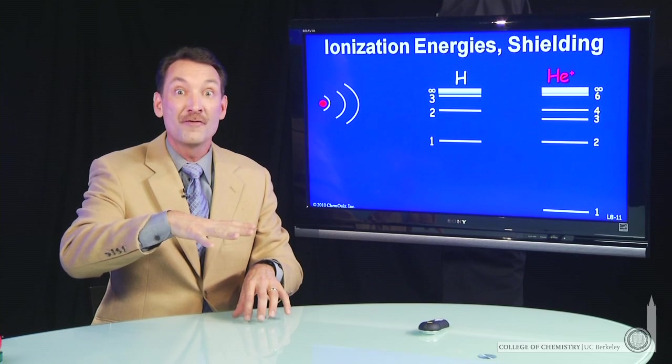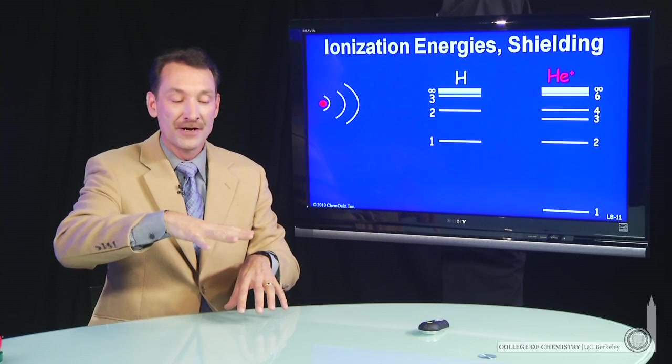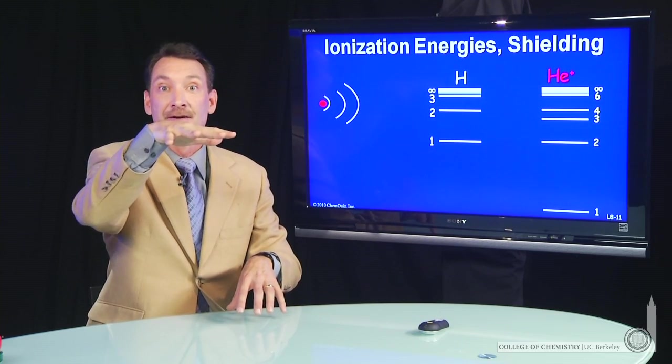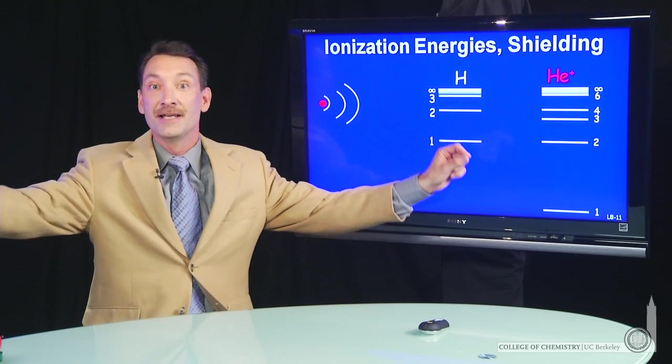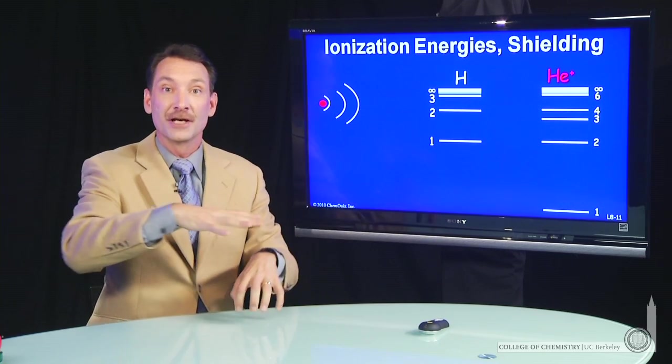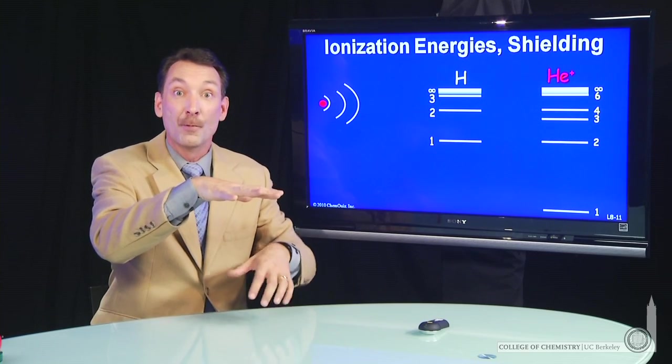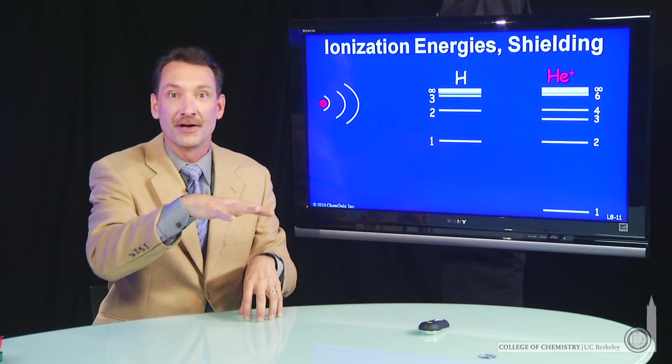And easier to remove means higher energy. Those energy levels go up closer to the zero state. Remember, the zero state for the nucleus and the electron is the ionized state. So you get closer to the ionized state, the more charge you can shield from outer electrons.